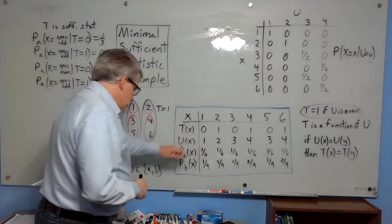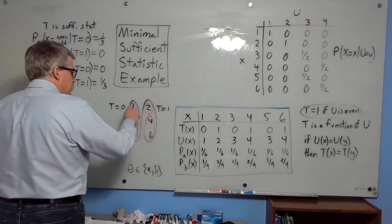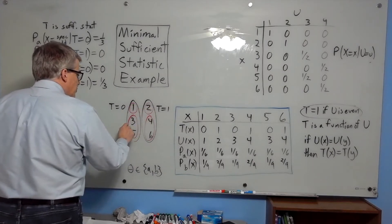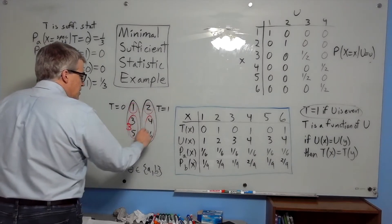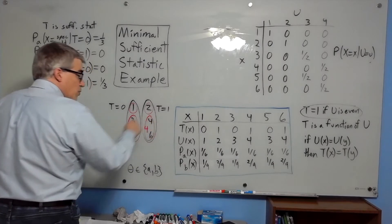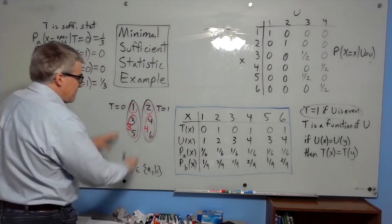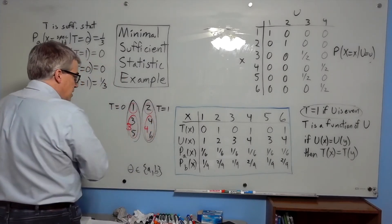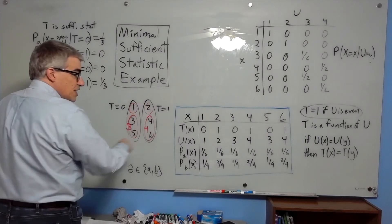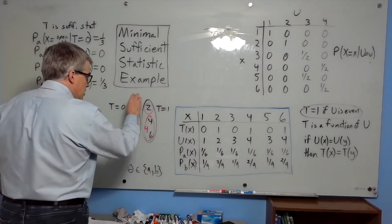This other statistic, u, is going to have a value of one for one, two for two, three if you're three or five, and four if you're four or six. Notice this is a finer partition. It cuts the possibilities into four sets, corresponding to the values of u: one, two, three, or four.